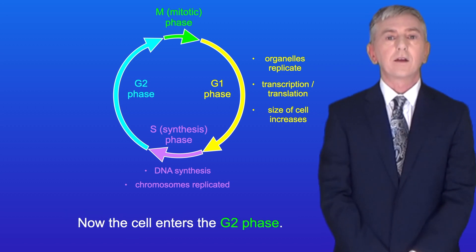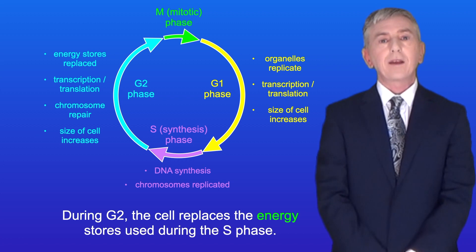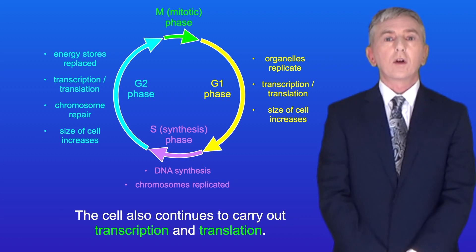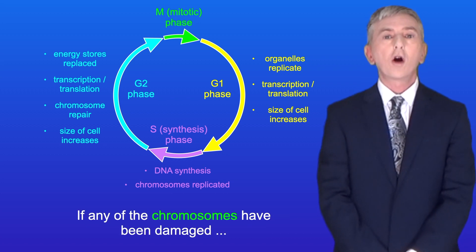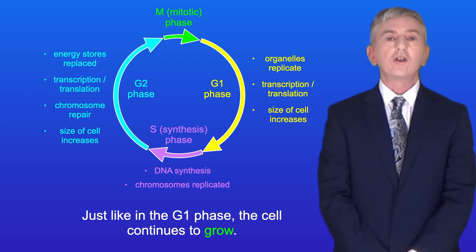The cell enters the G2 phase. During G2 the cell replaces the energy stores used during the S phase. The cell also continues to carry out transcription and translation. If any of the chromosomes have been damaged then they're repaired during G2. And just like in the G1 phase the cell continues to grow.